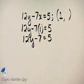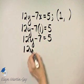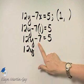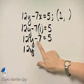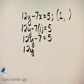I have 12y minus 7 times 1 is 7 is equal to 5. Let's add 7 to both sides. So I have 12y. If I add 7 to the left side, I have minus 7 plus 7, which is 0, so I'll just have 12y.